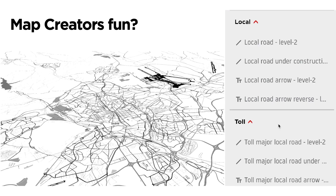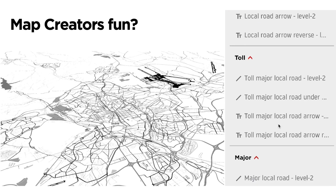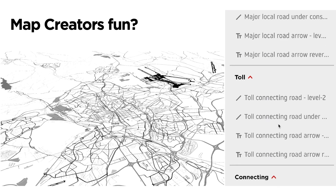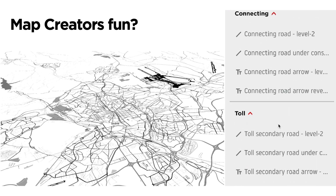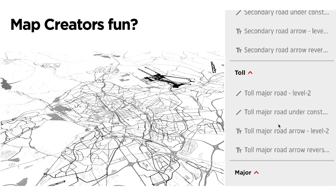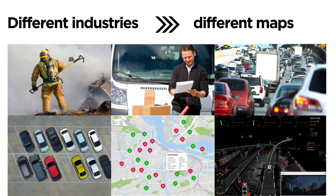Additionally, different types of applications require different kinds of map services. Emergency services, for example, require different features than parking applications, which in turn is different from creating high-definition maps for autonomous vehicles.